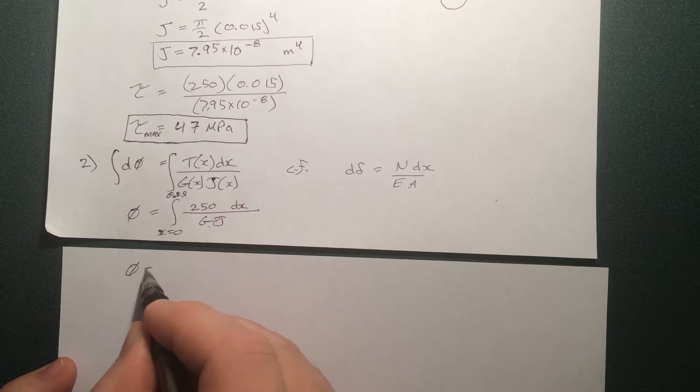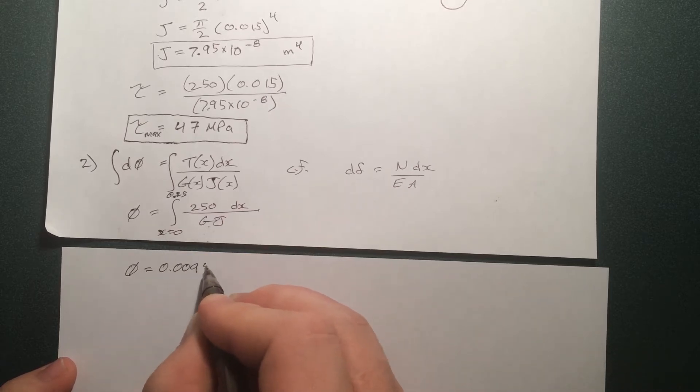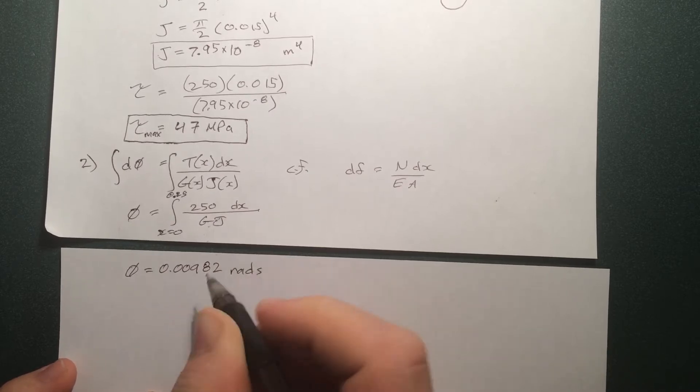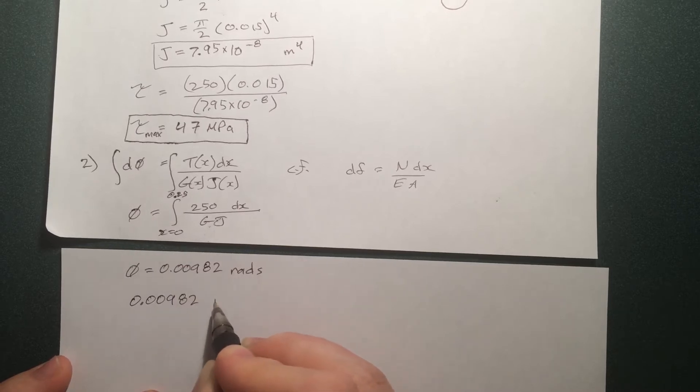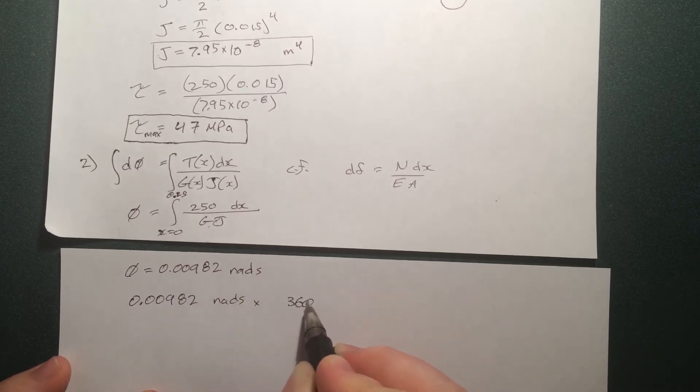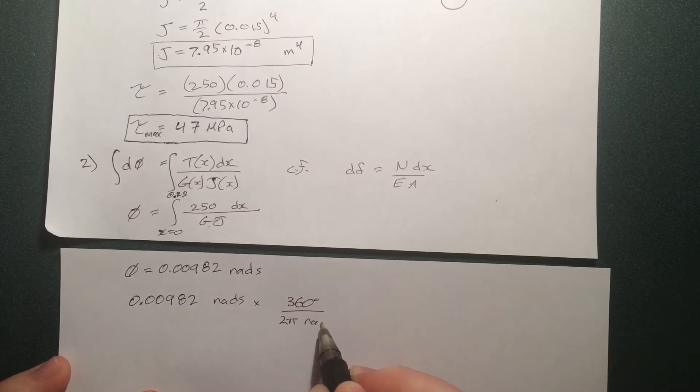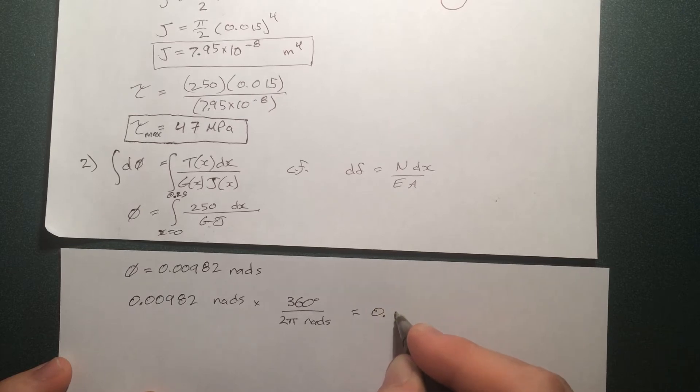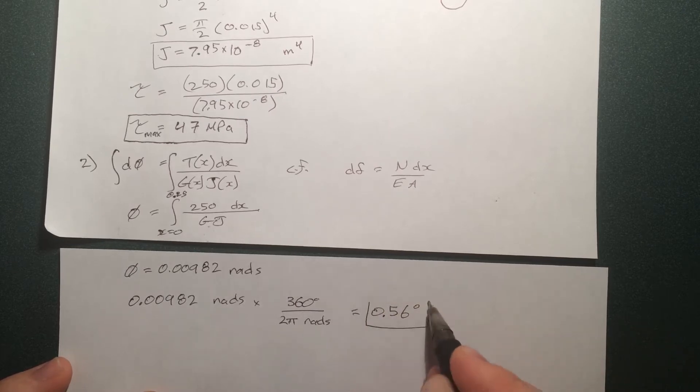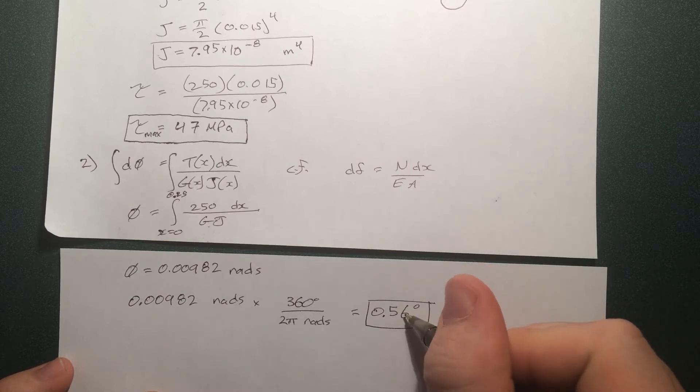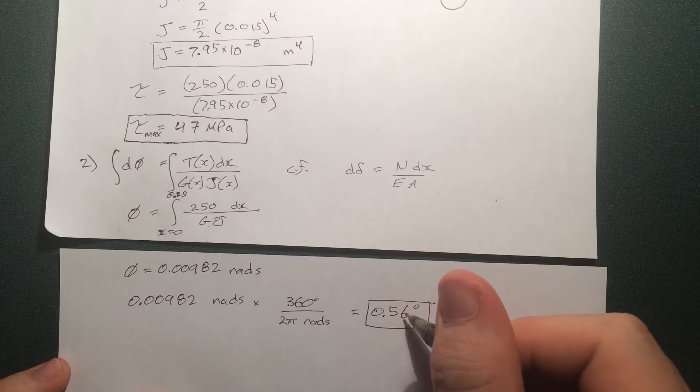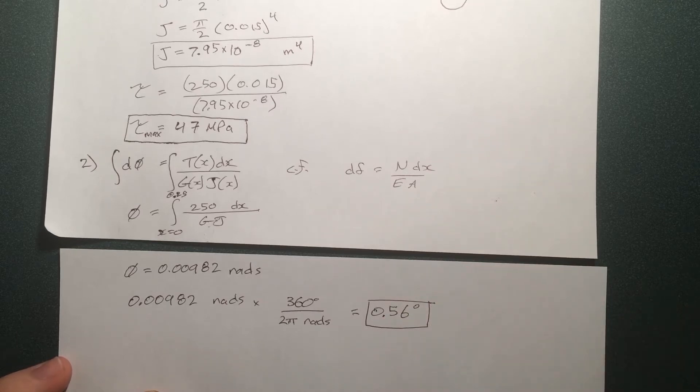It turns out to be phi equals 0.0098 radians. So this equation will always give you an answer in radians. Now the question asked for degrees. To convert to degrees, we use this formula here: 0.0098 radians times 360 degrees per 2π radians. This turns out to be 0.56 degrees. Well, that's a reasonable answer. We can expect that when you're turning the bolt off of your car tire, that little piece of metal, the lug wrench that you're turning it with, will approximately twist by about a half a degree.